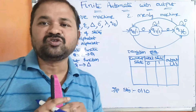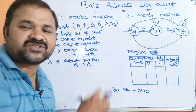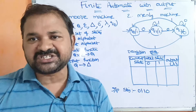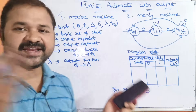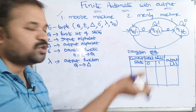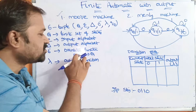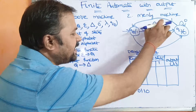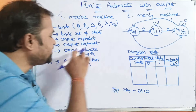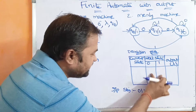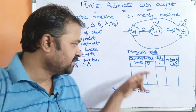In Moore machine, the output is specified within the state only. Next one is delta — the transition function, which maps from Q cross sigma to Q, similar to DFA. In NFA, delta maps Q cross sigma to 2 power Q. Here, delta means the DFA-style delta: Q cross sigma to Q, where this Q means the current state, sigma means the input alphabet containing two symbols, and the output Q means the next state. If you apply an input symbol on the current state, a new state will be generated.